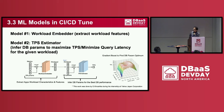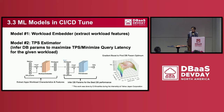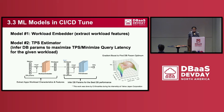Let me briefly describe the two machine learning models used in the demo. The automatic tuning consists of two layers. The first model is called the workload embedder, used to extract workload features. The output of the first model is used as input to the second model, called the TPS estimator. These models infer DB parameters to either maximize TPS or minimize query latency for the given workload.